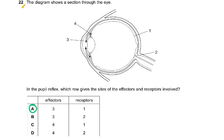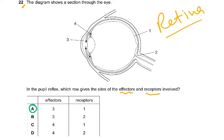Question 22: the diagram shows a section through the eye. Structure 1 is the retina, 2 is the blind spot, 4 is the ciliary muscle, and 3 is the iris. The question asks which row gives the correct effectors and receptors. The receptor is the part that receives information — like the skin when you touch something hot. In the eye, receptors can only be in the retina, which receives the light information. So receptors are in the retina, leaving choices A and C.